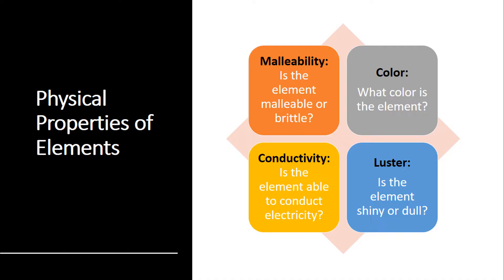Malleability, which is often discussed along with ductility, is the ability of an element to be hammered, pressed, or rolled into sheets. Ductility is the ability of the element to be drawn into wires. If an element is malleable, when pressure is applied to it, it tends to bend — the element tends to be flexible. In other words, if you hit it with a hammer, it would take a new shape.